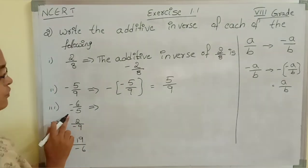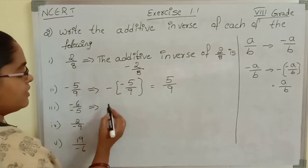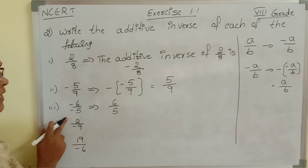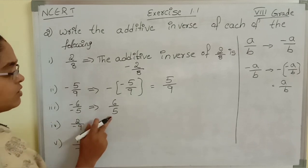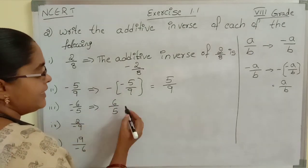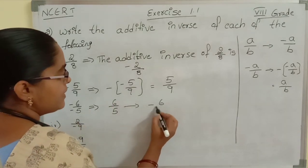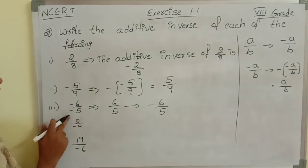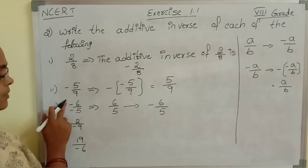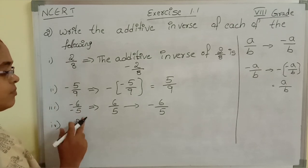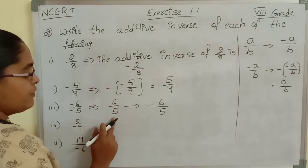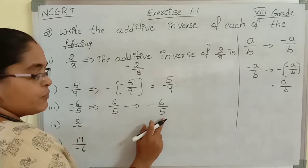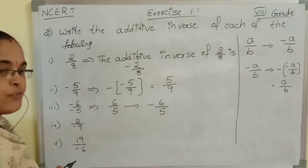Now see the third one: minus 6 by minus 5. Minus divided by minus is nothing but 6 by 5, so minus 6 by minus 5 equals 6 by 5. Its additive inverse is minus 6 by 5. In the question itself we have negative sign in both numerator and denominator — minus divided by minus gives plus, so it becomes 6 by 5, and the additive inverse is minus 6 by 5.